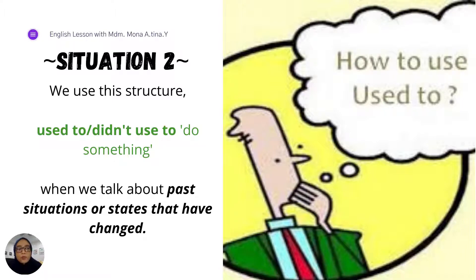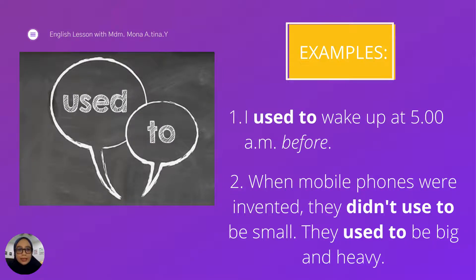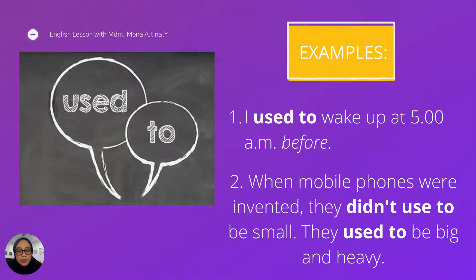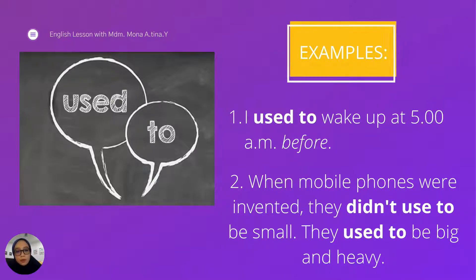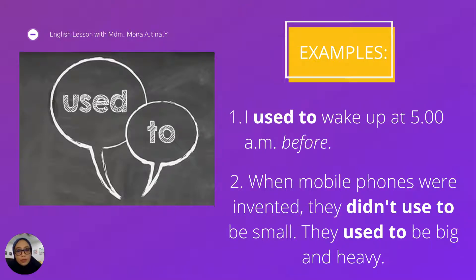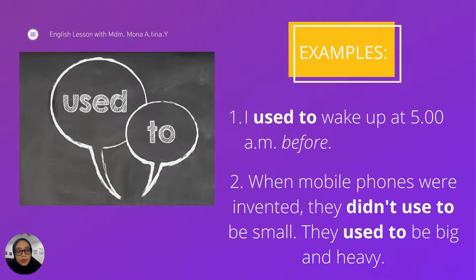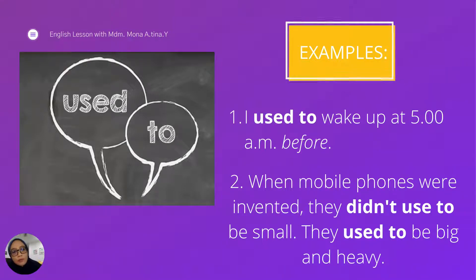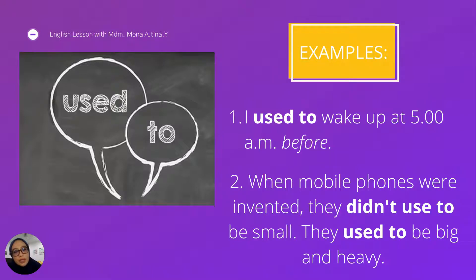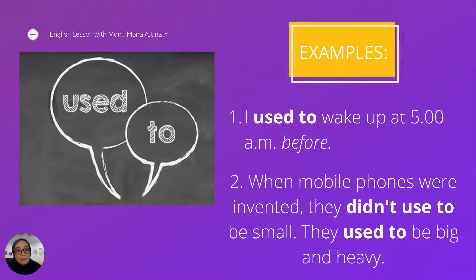What were the situations before? Now let's take a look at the examples. For past habits - what we usually did before - I used to wake up at 5 a.m. before. The word before shows the past time, so that's why we use the phrase used to. Or the second example from your textbook: when mobile phones were invented, they did not use to be small. They used to be big and heavy. So that is the situation in the past.